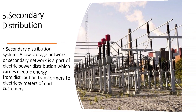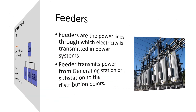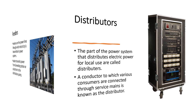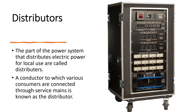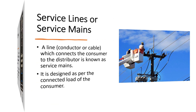The main elements of the distribution system are feeders, distributors, and service lines or service mains. Feeders are the power lines through which electricity is transmitted in power systems, transmitting power from a generating station or substation to the distribution points. Distributors are the part of the power system that distributes electric power for local use; a conductor to which various consumers are connected through service mains is known as the distributor. Finally, a line conductor or cable which connects the consumer to the distributor is known as service mains.